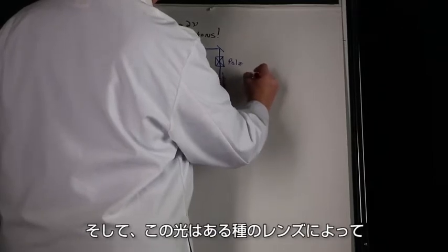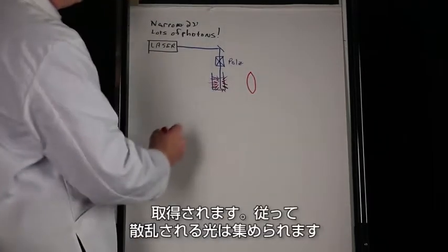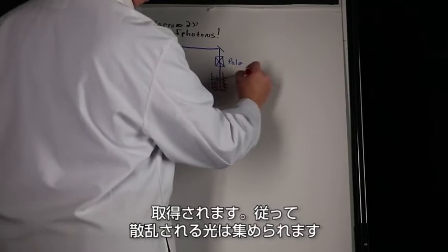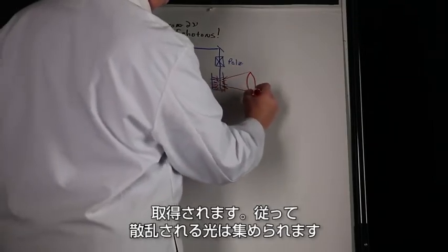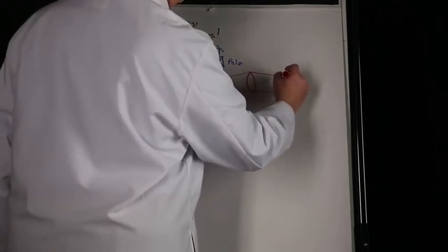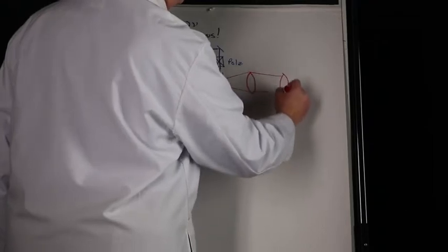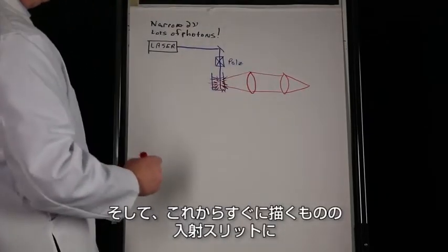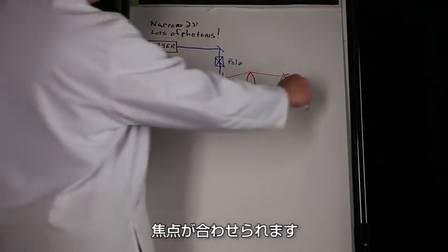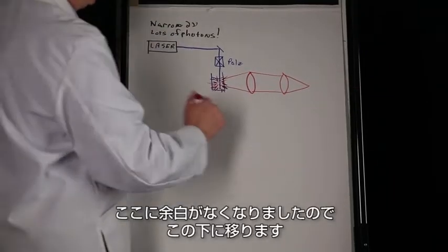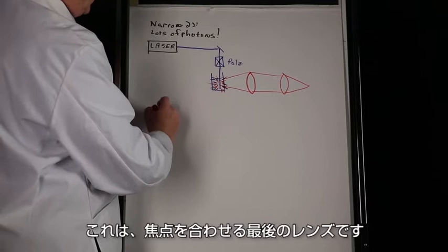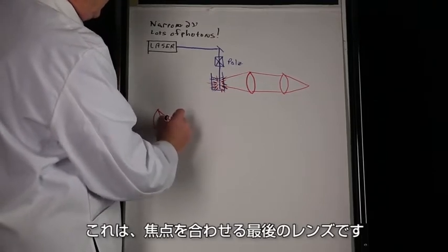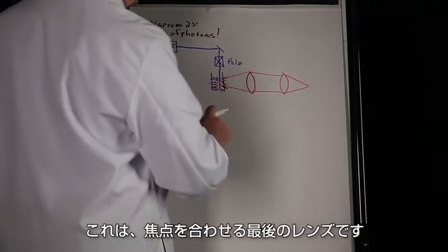That light is then collected by some sort of lens, so the light coming out is collected and then focused down onto the entrance slit of something we'll come to in a moment.